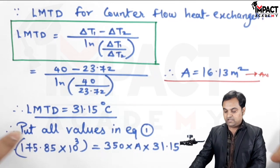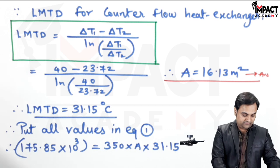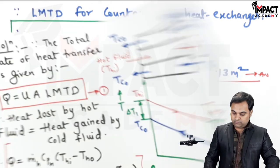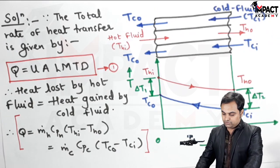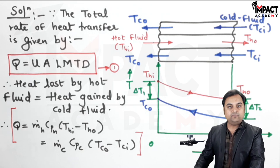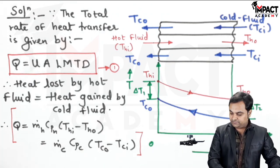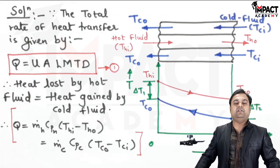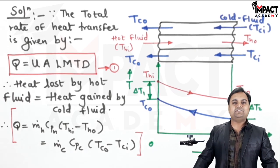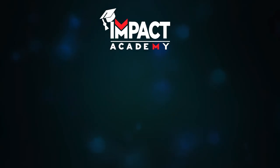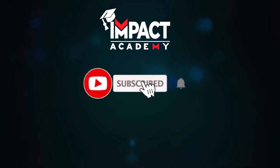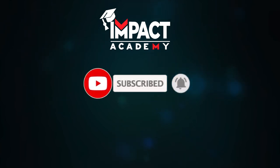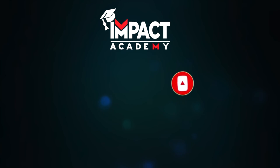The surface area of the counter flow heat exchanger is 16.13 m², and with this the problem is completed. If you find these videos helpful, please like, share, comment, and subscribe to the channel. Thanks for watching.